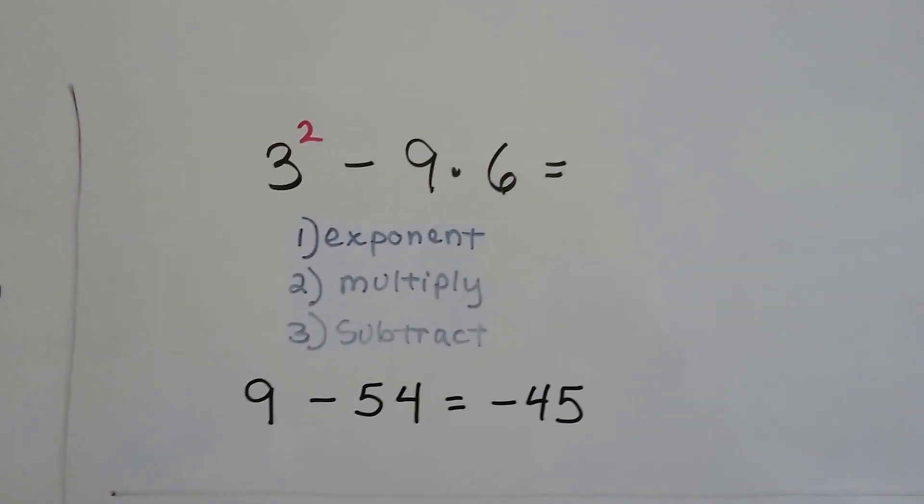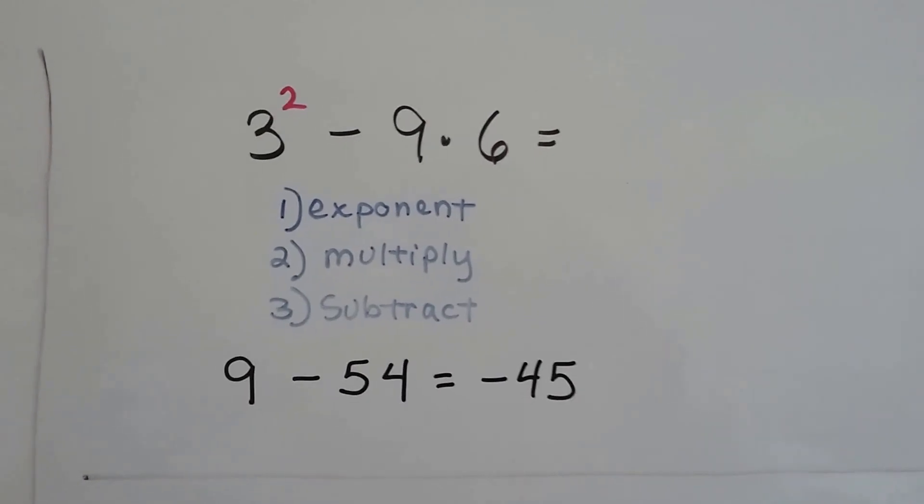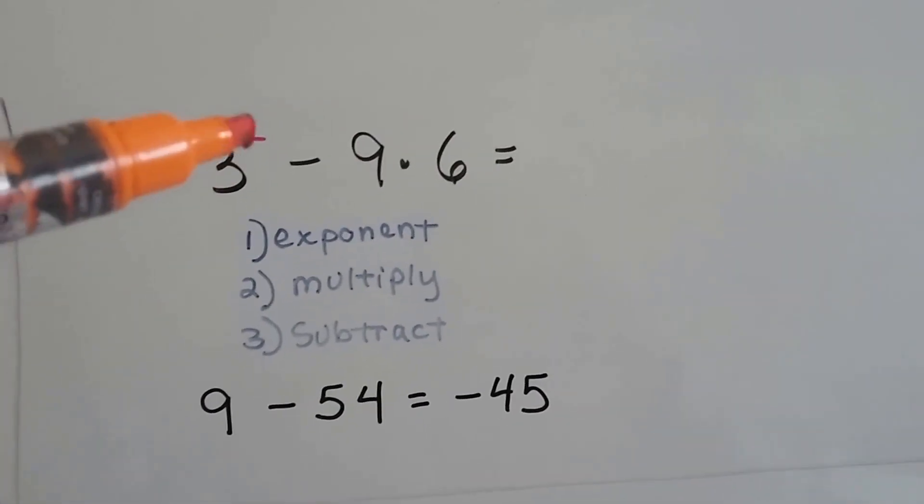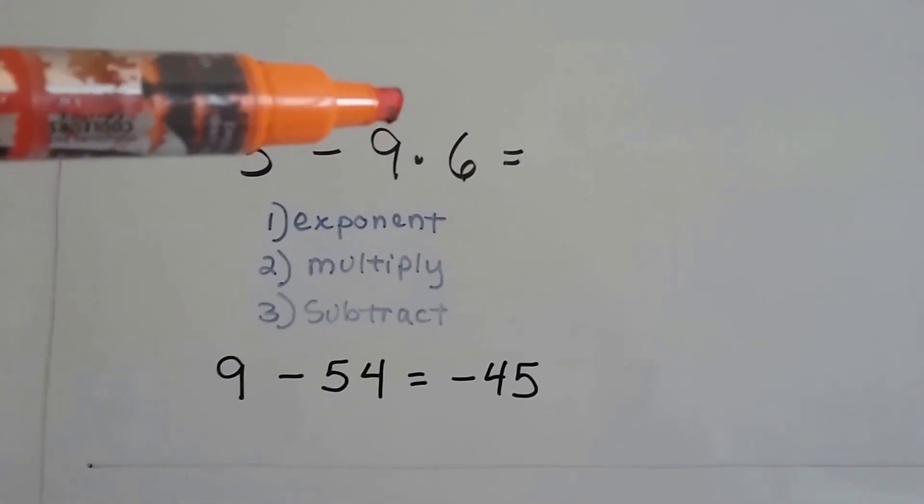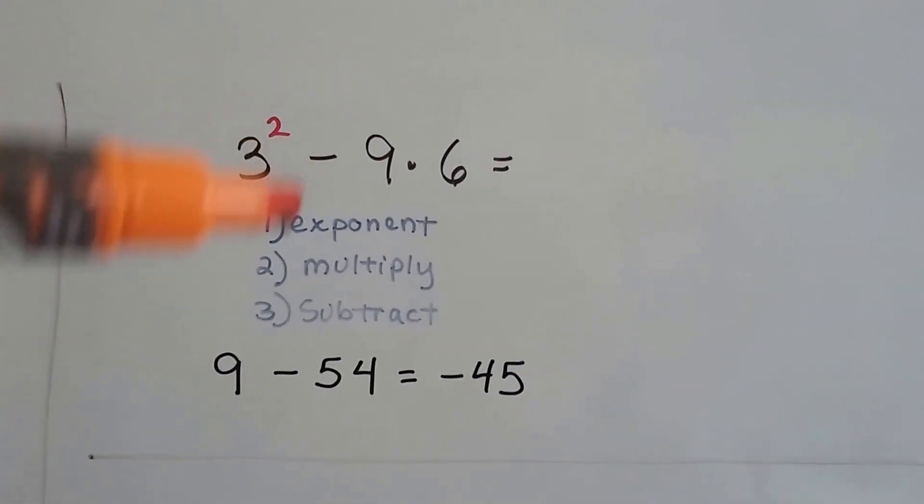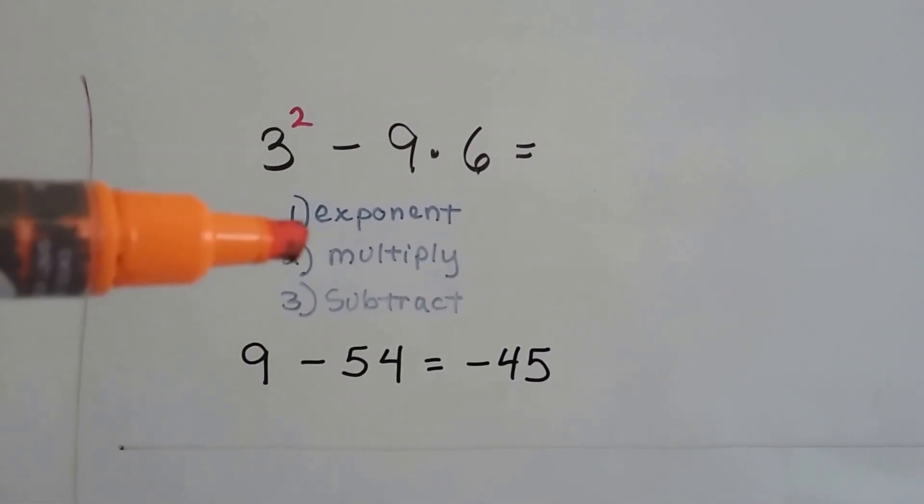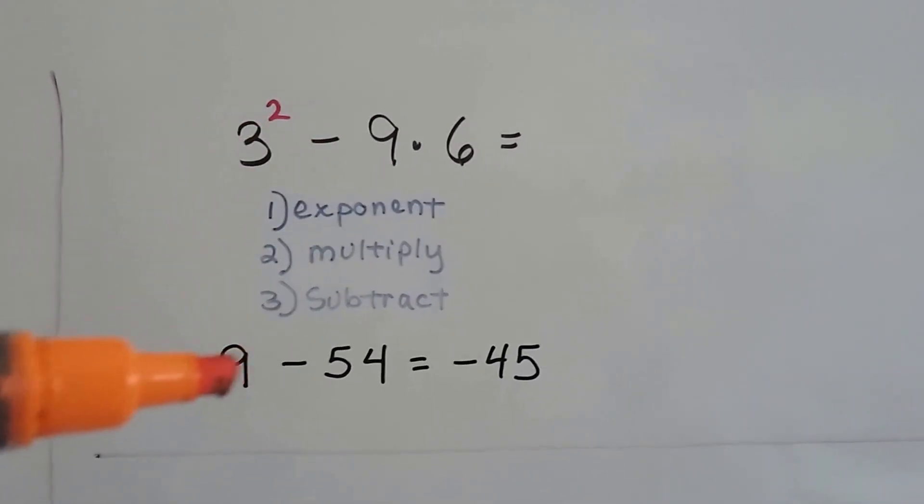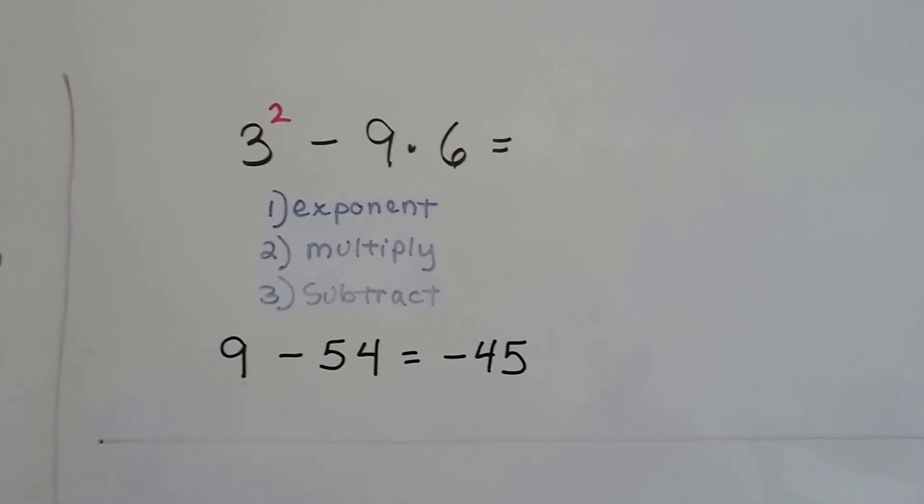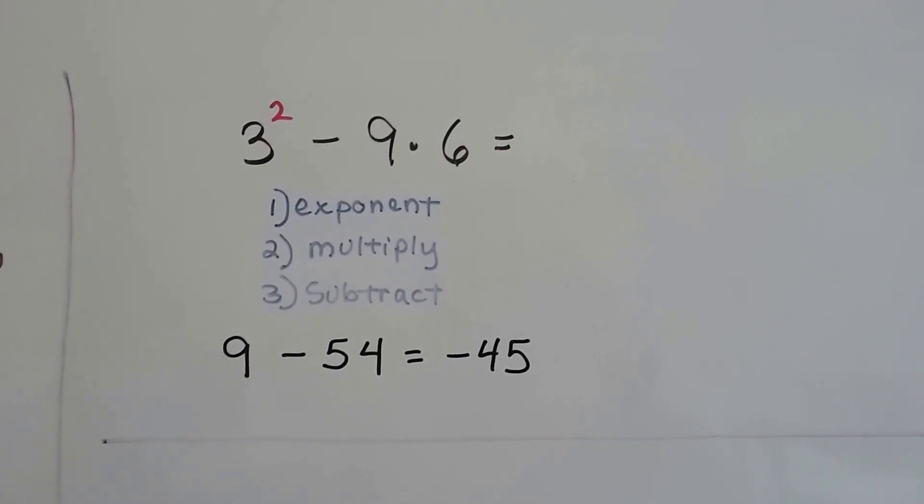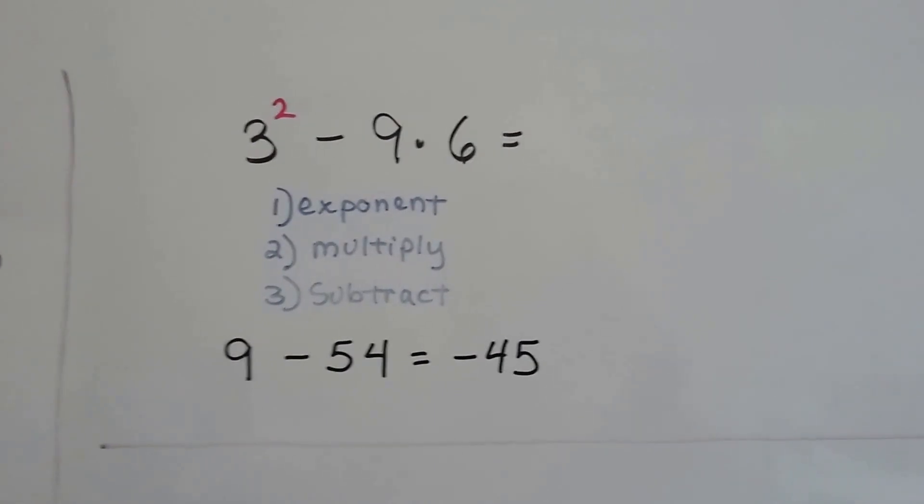Here we have 3 squared minus 9 times 6. First thing we're going to do is this exponent. 3 squared is 9. And now we're going to jump to the multiplication. 9 times 6 is 54. And we're going to subtract 9, take away the 54, and it's going to give us a negative 45. There were no grouping symbols, so we just did the exponent first, then we multiplied, and then we subtracted.